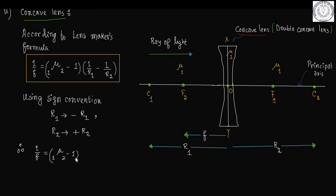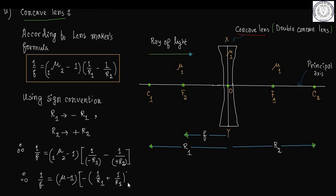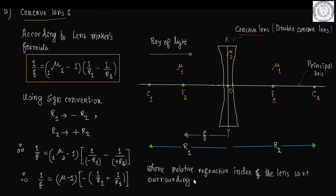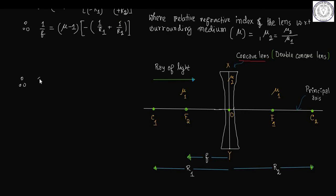Therefore, 1 by f becomes mu2 minus 1, times 1 by minus R1 minus 1 by plus R2. This gives 1 by f equal to mu minus 1, bracket open, minus bracket open 1 by R1 plus 1 by R2, where the relative refractive index mu equals mu2 by mu1, and mu2 is the refractive index of the material of the concave lens.